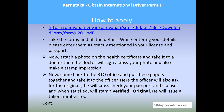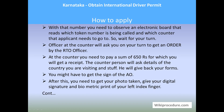Come back to the RTO office with all the papers together and present them to an officer at the counter marked for IDP. The officer will cross-check your passport and license, and if satisfied with their validity, will stamp 'Verified Original' on the form and issue you a token number.